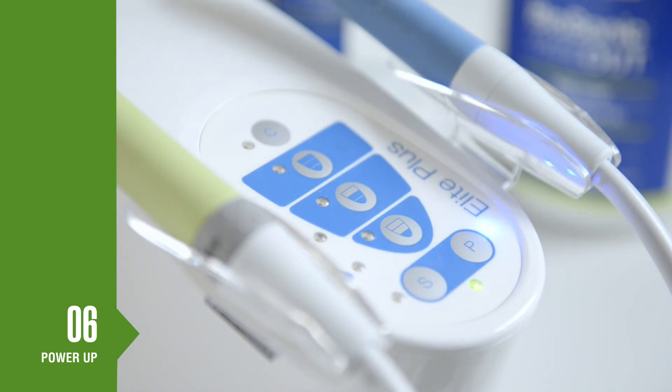The green standby light will remain on and the blue lights next to the S and P buttons will illuminate to indicate that the user should choose either the scaler or polisher mode.